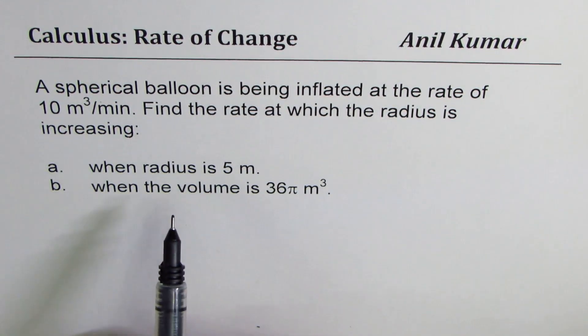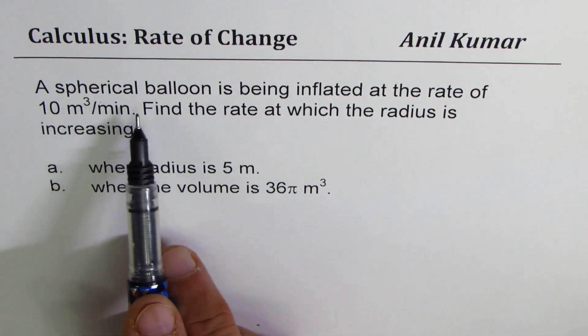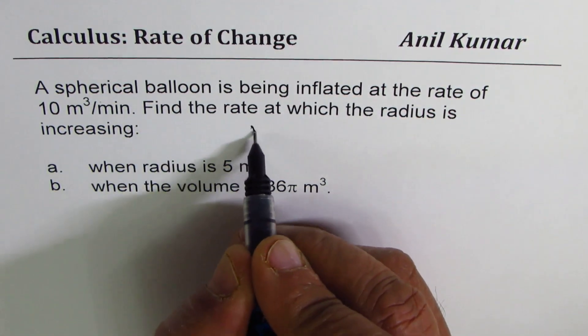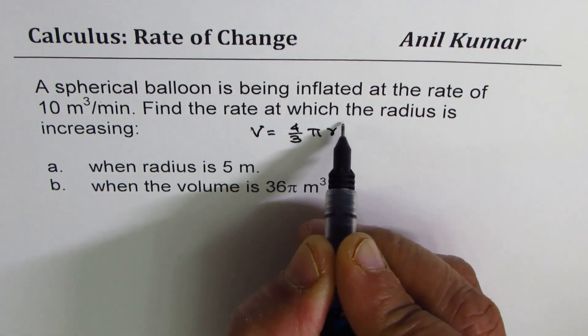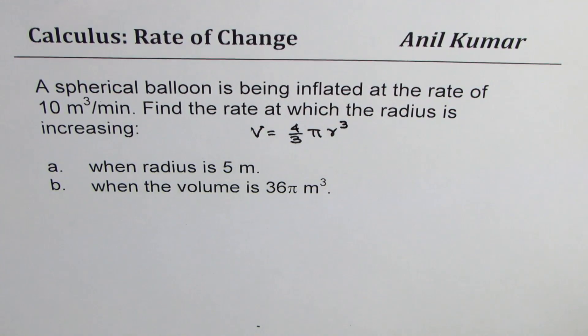When radius is 5 meters and b is when volume is 36 pi meter cube. Now in such questions, you should know the formulas. What is the volume of a sphere? So let's write down the formula here. Volume is 4 by 3 pi r cube. So that's the volume of this sphere.